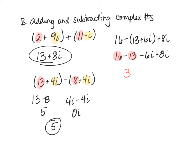And then we have negative 6i plus 8i which is plus 2i. So 3 plus 2i is my final result there. So we're basically adding the real and adding the imaginary parts.